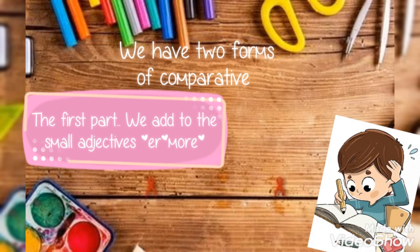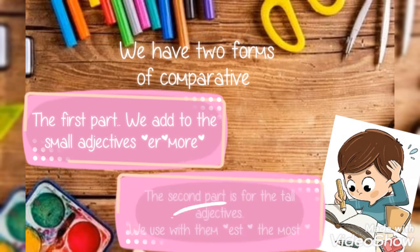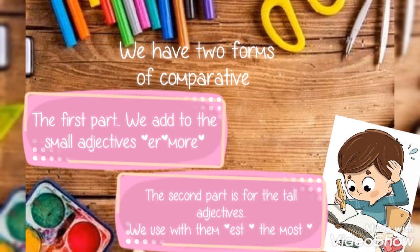We have two forms of comparative. The first form: we add to small adjectives '-er' or 'more'. The second form is for tall adjectives — we use with them '-est' and 'the most'.